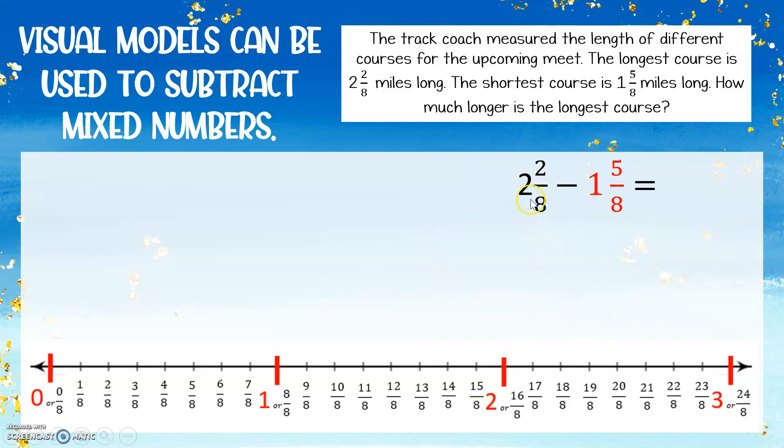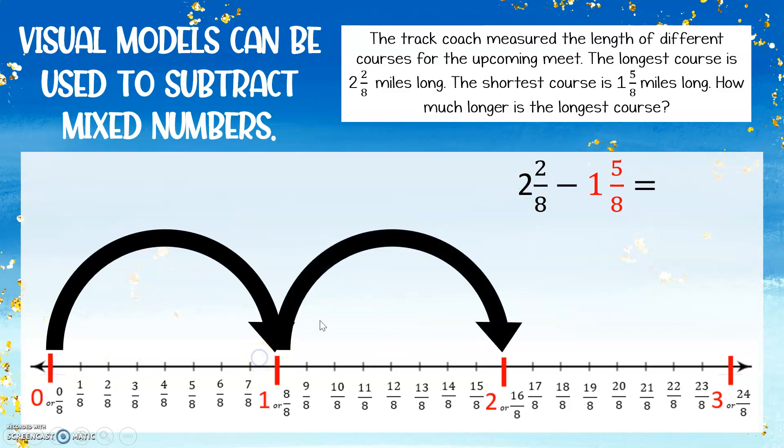So now I'm going to mark in black my 2 and 2 eighths on the number line. First I'm going to count my wholes. I'm going to have 1 whole going from 0 to 1 and 2 wholes going from 1 to 2. So I have 2 wholes that match my whole number in my mixed number. Now I need to add 2 eighths. So when I add 2 eighths, I need to have 1 eighth jump, 2 eighths jump.